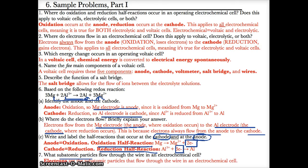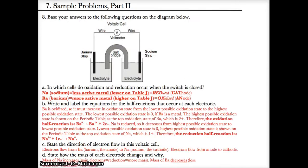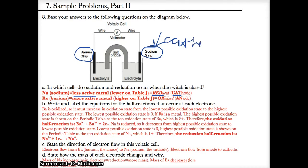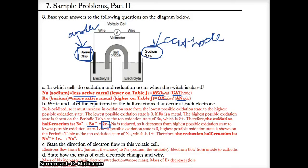The subatomic particles that flow through the wire are electrons, since they're the negative charges that allow electricity to be conducted. When comparing Na and Ba: Ba is the more active metal since it's higher on Table J, so it's more easily oxidized and is the anode. Na is lower and less active, so it's more easily reduced and is the cathode. The half reaction for Ba is: Ba⁰ → Ba²⁺ + 2e⁻. For Na: Na⁺ + 1e⁻ → Na⁰.